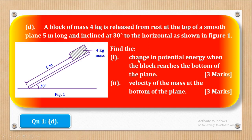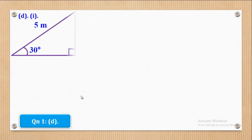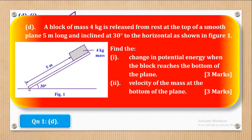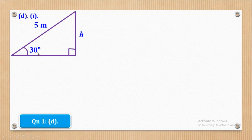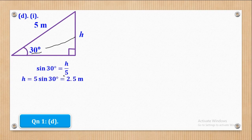For Roman 1, we need the change in potential energy when the block reaches the bottom. First we must find the vertical height. Drawing a right-angled triangle, with the 30-degree angle at the base, the vertical side is the opposite and the slope is the hypotenuse. Therefore: sin 30° = h/5, which gives h = 5 sin 30° = 2.5 m.